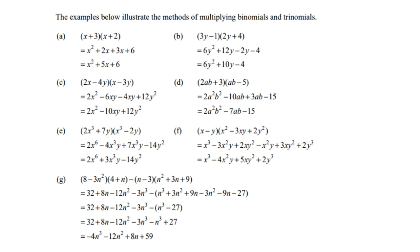Look at C. 2X times X is 2X squared, 2X times negative 3Y is negative 6XY. Negative 4Y times X is negative 4XY, and negative 4Y times negative 3Y is positive 12Y squared. Again, collect the two like terms. Negative 6XY minus 4XY gives you negative 10XY.